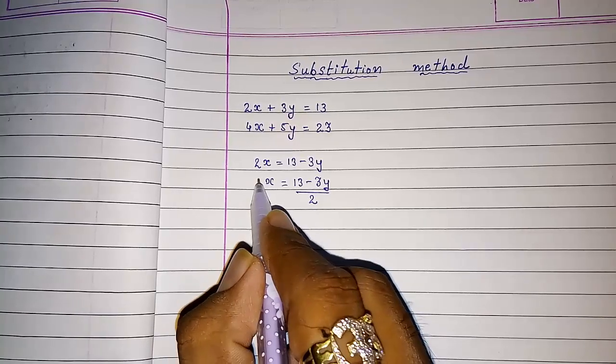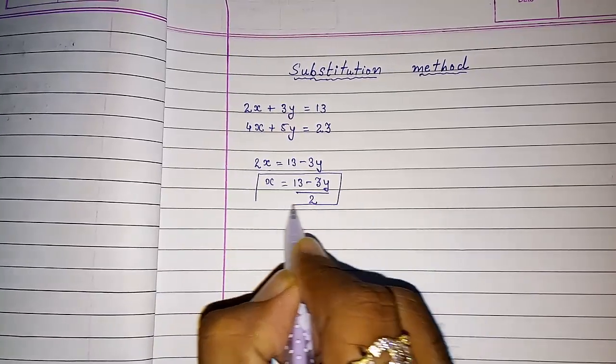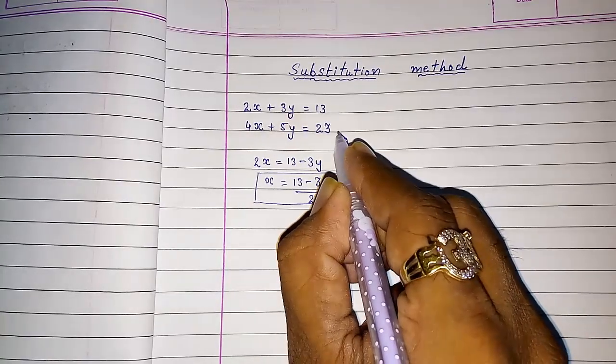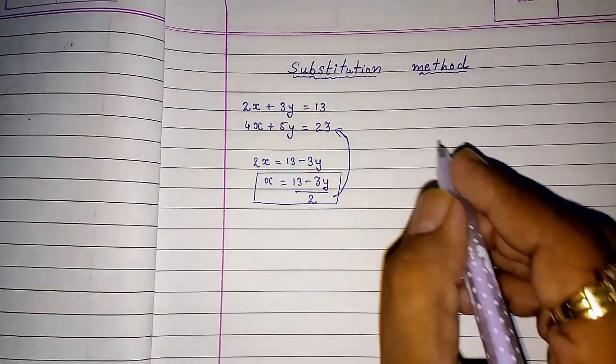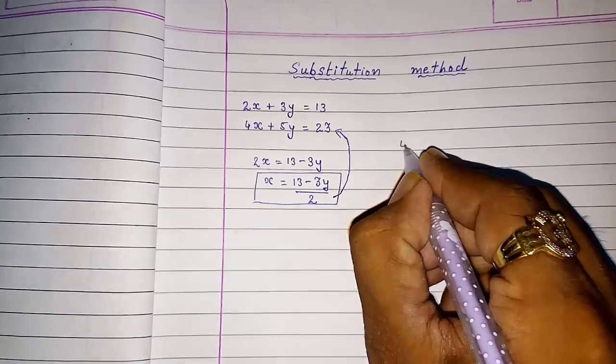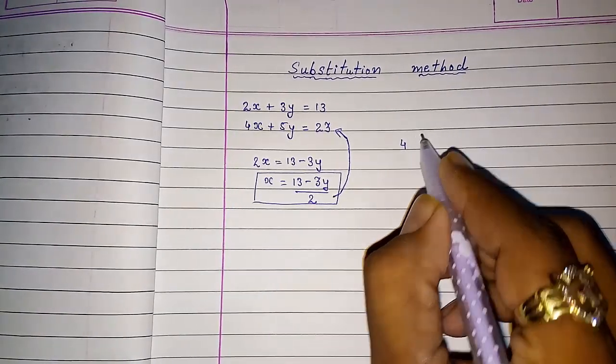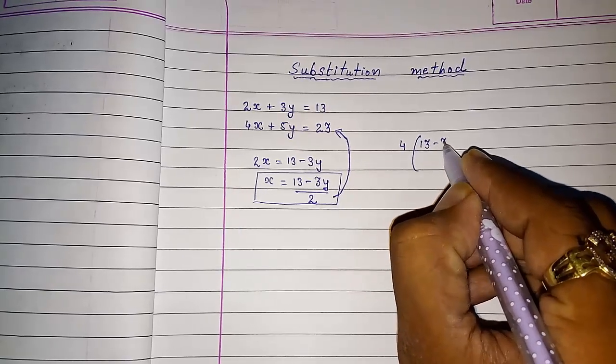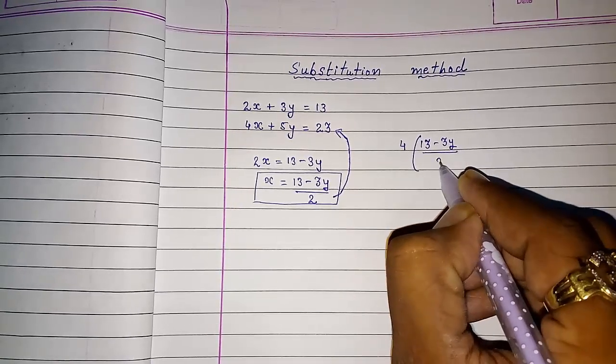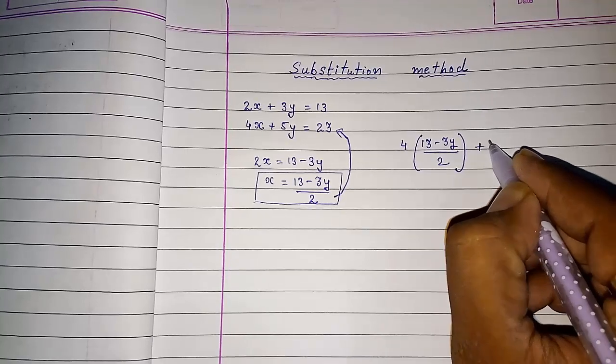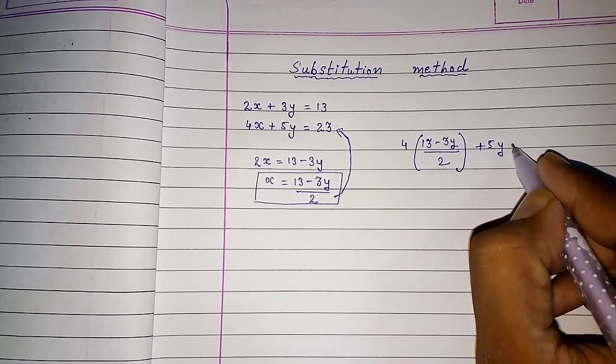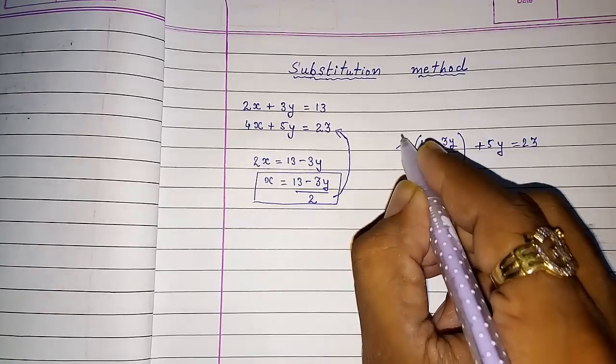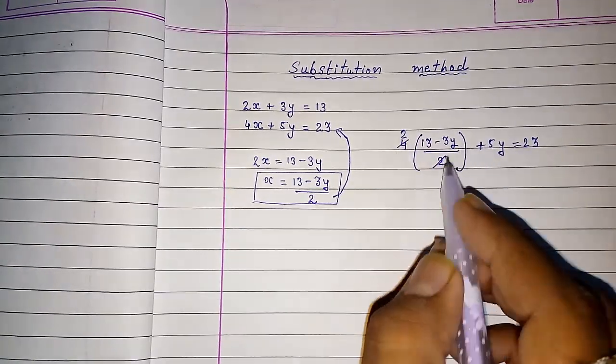Now here we got x in terms of y. Now we have to put this value in equation number 2. So we are going to do 4 × (13 - 3y) / 2 + 5y = 23.